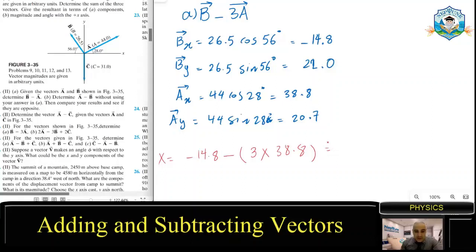It's a negative number. -14.8 minus three times 38.8 is -131.2. Okay, so I just tell myself that's negative. That means the X is negative.